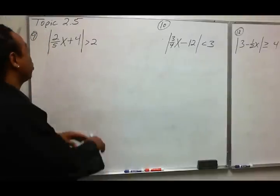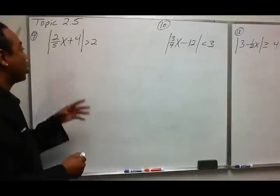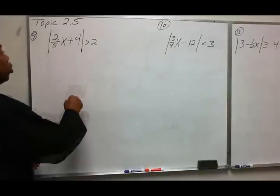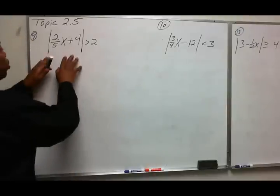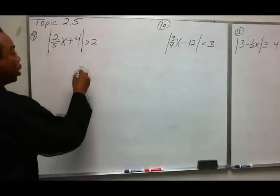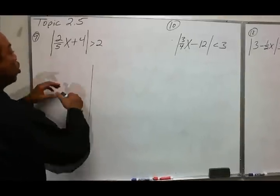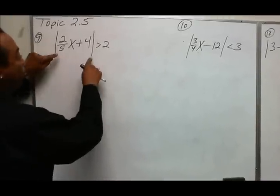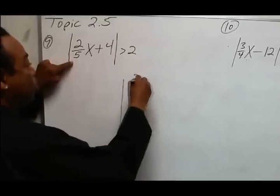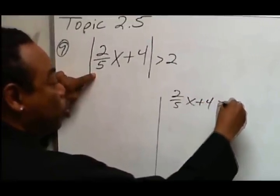Topic 2.5. We'll be solving an inequality that has an absolute value. The rule for absolute values followed by a greater than sign is that we split it up into a left and right side. On the right side, we simply remove the absolute values. So we have 2/5x plus 4 is greater than 2.